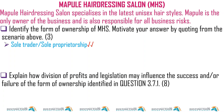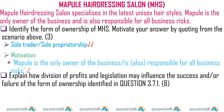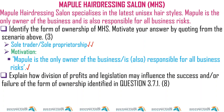Mapule Hairdressing Salon specializes in the latest unisex hairstyles. Mapule is the only owner of the business and is also responsible for all business risks — that means this is a sole trader. Identify the form of ownership: sole trader. The motivation is the risk part — she is responsible for all business risks.